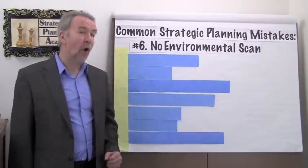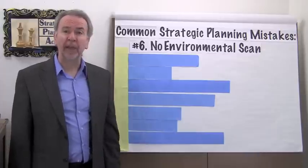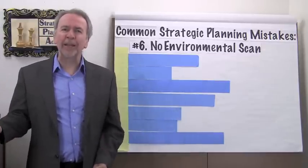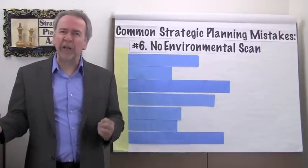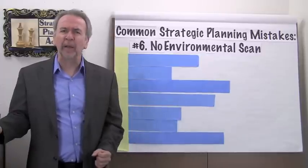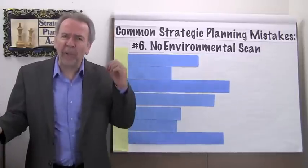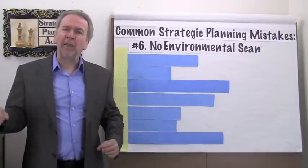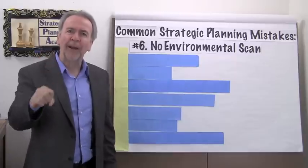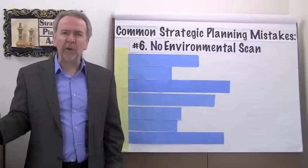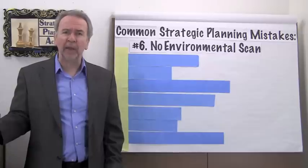Today's topic is no environmental scan. Charles Kettering was a genius American inventor and engineer with over 140 patents. 60 years ago he said, 'I'm interested in the future because that's where I'll spend the rest of my life.' Being interested in the future is even more crucial now because things move so fast and the world is so much more complex.